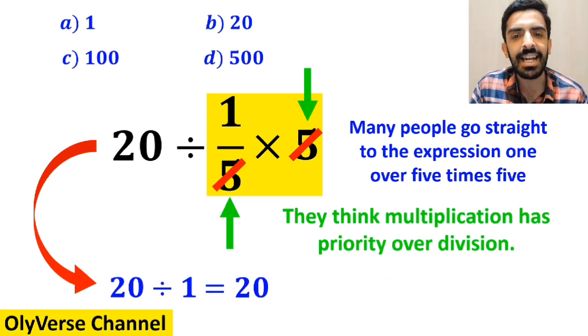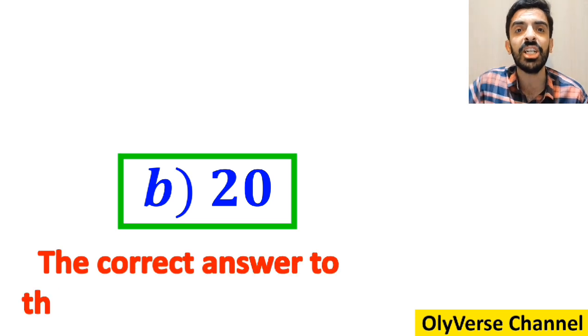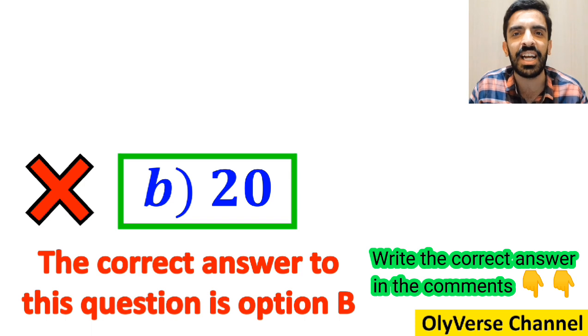Then, without any hesitation, they immediately say that the correct answer to this question is option B. However, it's not the correct answer to this question.